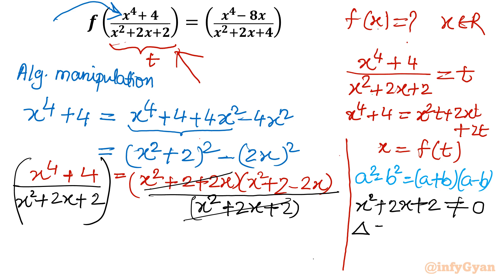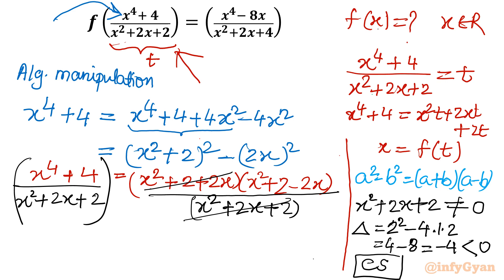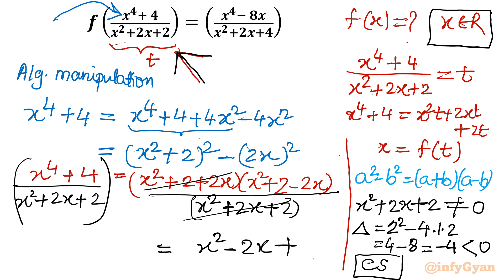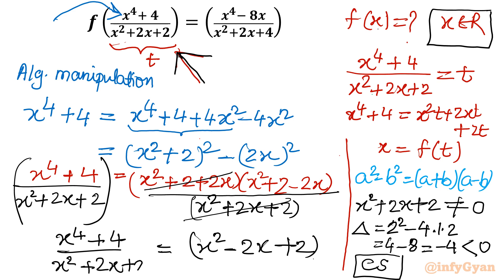Let us find the roots by checking the discriminant: b² - 4ac = 4 - 4(1)(2) = 4 - 8 = -4, which is negative, giving complex roots. So for real x we have no problem dividing. After cancellation, the remaining functional variable in the argument is x² - 2x + 2, meaning we have f(x² - 2x + 2) on the left-hand side.